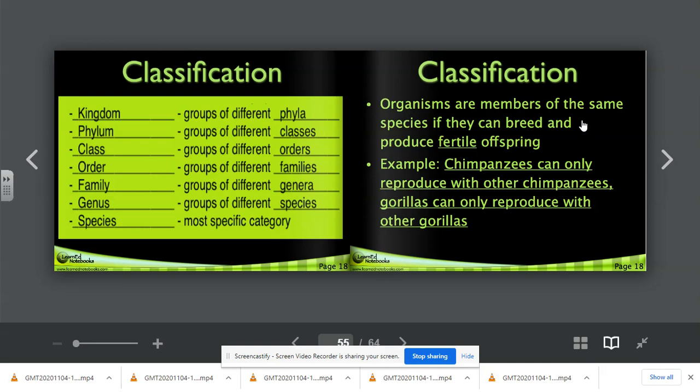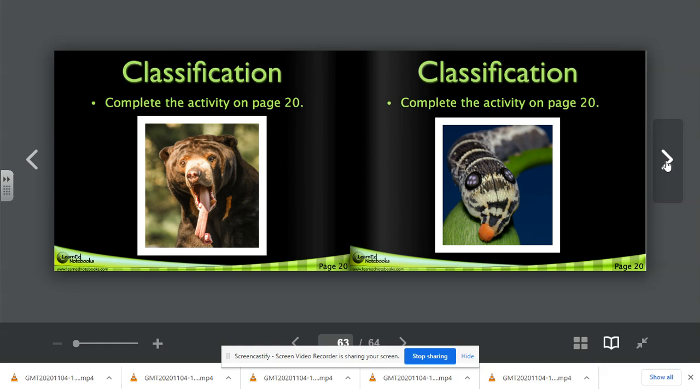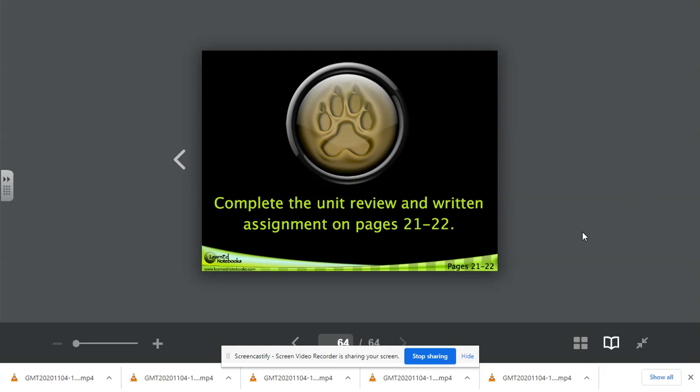Chimpanzees, an example. Organisms are members of the same species if they can breed and produce fertile offspring. Fertile means that they can have their own offspring. An example: chimpanzees can only reproduce with other chimpanzees. Gorillas can only reproduce with other gorillas. So we'll be working on the classification activity on page nineteen together in class, as well as on page twenty. So take a look at those organisms and just start thinking about them. And we'll be working on that together in class.